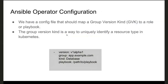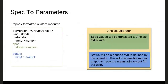Let's talk about that configuration file, which maps the group, version, and kind to a playbook or role. This is really the heart of how this works: you define your CRD's group, version, and kind, you tell it which playbook to use, you package that into a container, and the Ansible operator knows what to do when events come in for that resource.